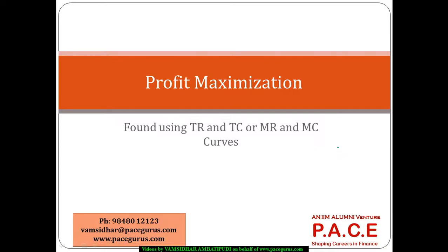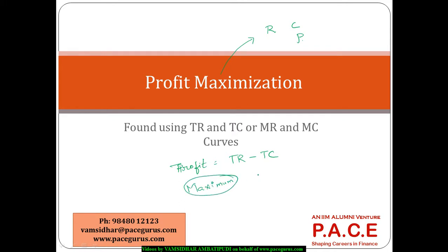Let's understand the concept of profit maximization, which talks about how firms can maximize their profit by playing around with revenues and costs. Profit is nothing but total revenue minus total cost. To find the maximum value of this profit, we find the derivative of the equation and equate it to zero.